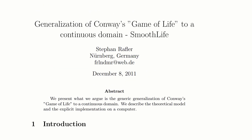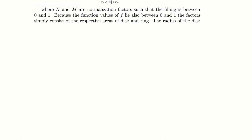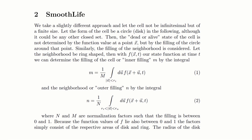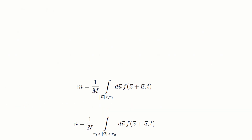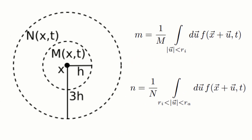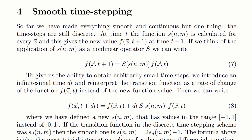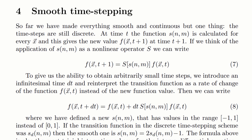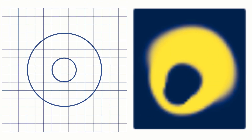It's all based on this 2011 paper — a generalization of Conway's Game of Life to a continuous domain — which describes the theoretical model and also the best way of implementing it. In this setup, we talk about the state of the effective cell at a point as the average of the field over a neighborhood around that point, and you move from the blocky and familiar Conway's setup to the continuous output you get from Smooth Life.